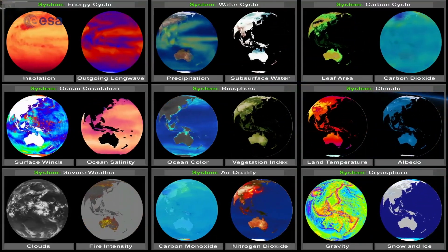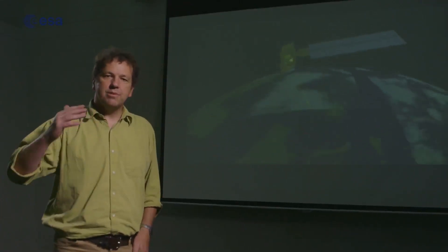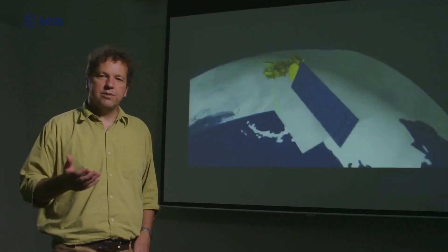Most Earth observation satellites are in what's called a low Earth orbit. This means they orbit, generally speaking, north to south or south to north approximately, while the Earth turns below them.